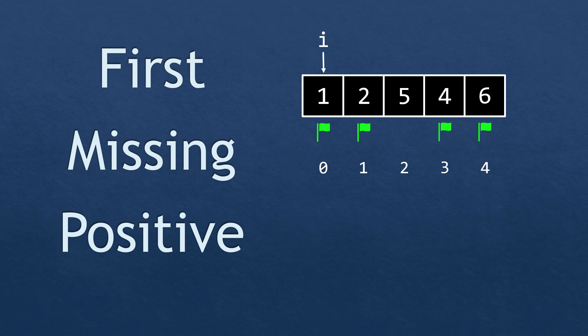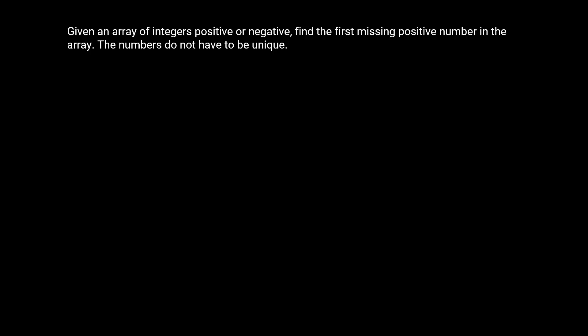Hello everyone. In this video, we're going to look at the first missing positive problem. The problem is that we are given an array of integers, positive or negative, and we have to find the first missing positive number in the array. As a note, the numbers don't have to be unique.